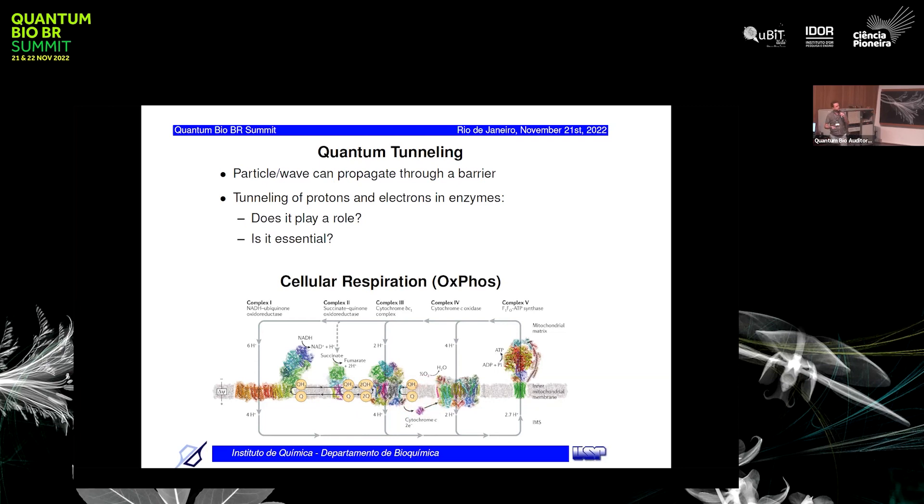Electrons eventually pass to cytochrome c and go to complex four where they eventually reduce oxygen to water. That's the reason we breathe oxygen from the air. The electrons from NADH and succinate, which are intermediates in the Krebs cycle and metabolics that carry electrons removed from sugars, from fats, from all the food that we ingest, wind up here and then eventually to oxygen. That's why it's called cellular respiration. I'll be talking later on about complex two and complex three.